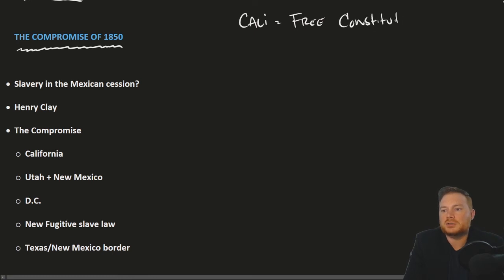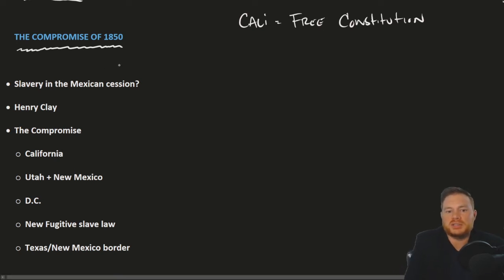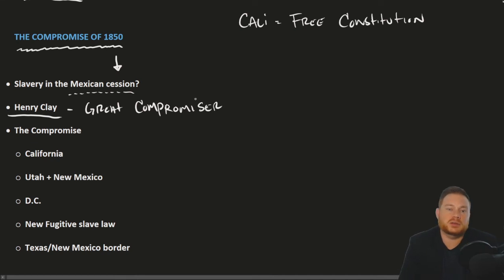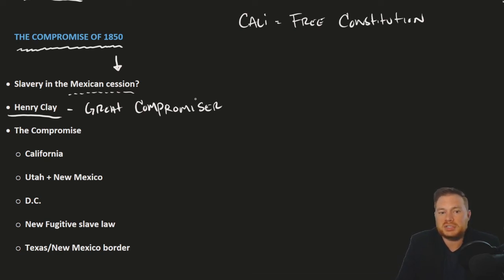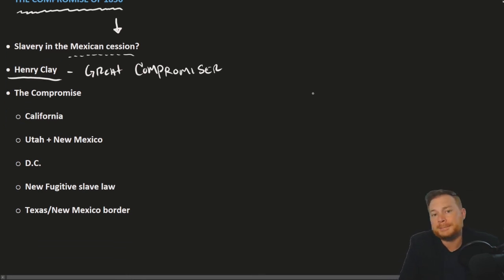California created a free constitution, and one of the things that made California different from examples like Missouri and Texas was that for all practical purposes there were no slaves already in California by the time it applied for statehood, whereas there were already slaves in Missouri and Texas. The Compromise of 1850 would once and for all answer this question about slavery in the Mexican Cession. Henry Clay — our great compromiser who had been around in American politics for a very long time — crafted it. By 1850, thirty years after the Missouri Compromise, the compromise is more complicated with more moving pieces to get both Northerners and Southerners to agree.